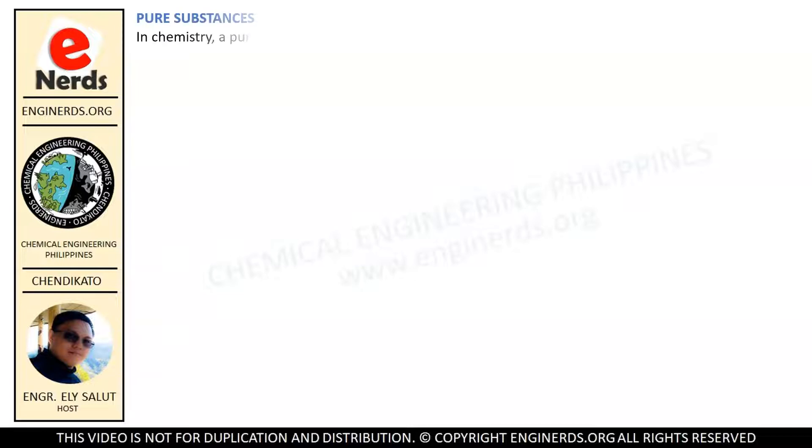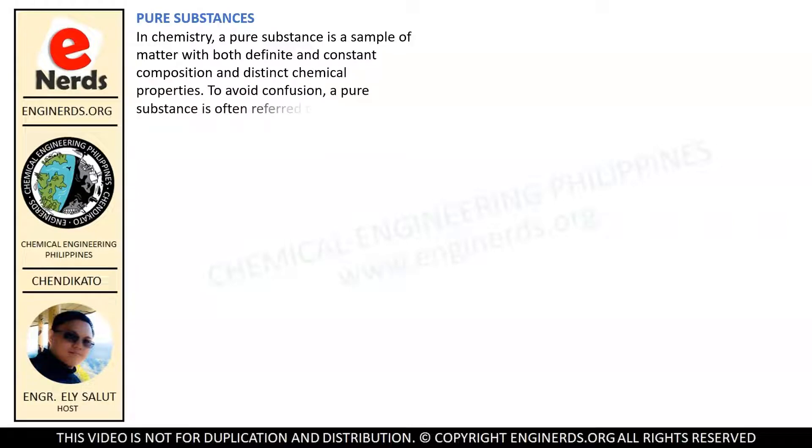In chemistry, a pure substance is a sample of matter with both definite and constant composition and distinct chemical properties. To avoid confusion, a pure substance is often referred to as a chemical substance. To a non-chemist, a pure substance is anything composed of a single type of material. In other words, it is free of contaminants. If you recall our graph, a pure substance can either be an element or a compound. Let us first discuss the elements.